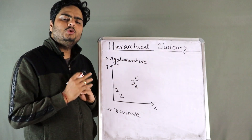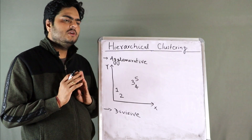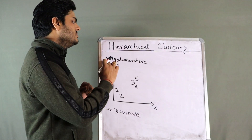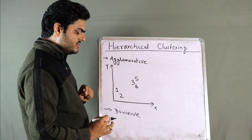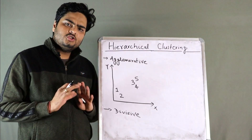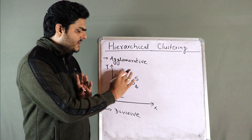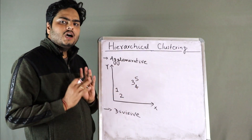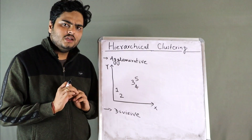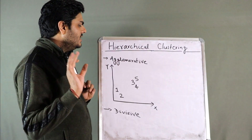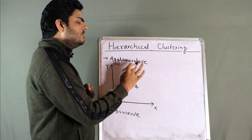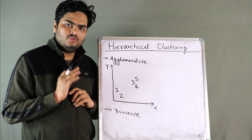There are basically two types of hierarchical clustering: one is known as agglomerative and the second one is known as divisive. I will show you with simple data how these two clustering algorithms work. First of all, let's understand how agglomerative clustering works.